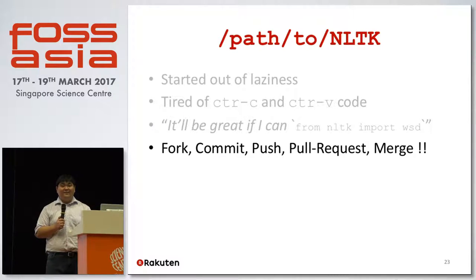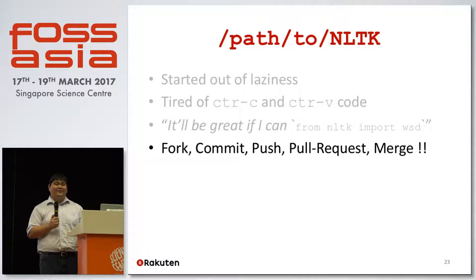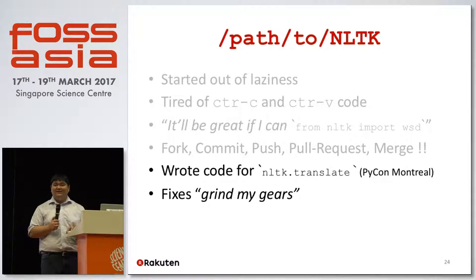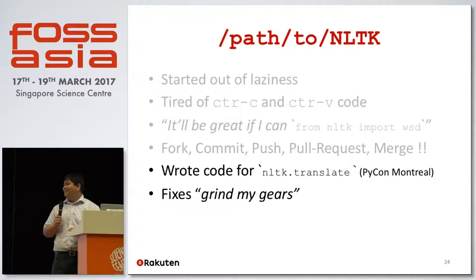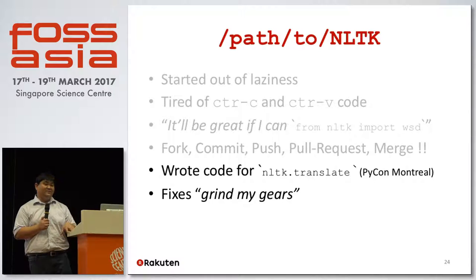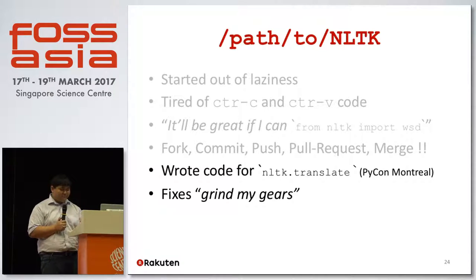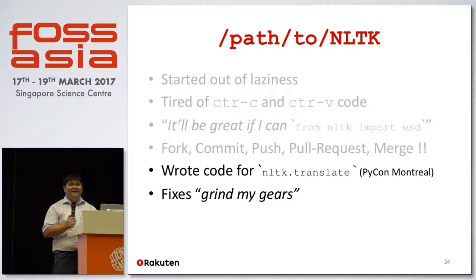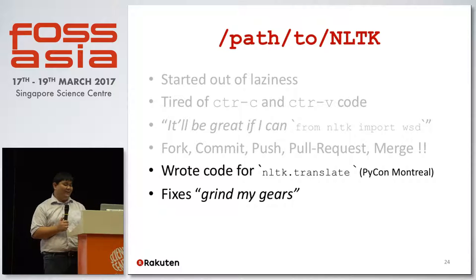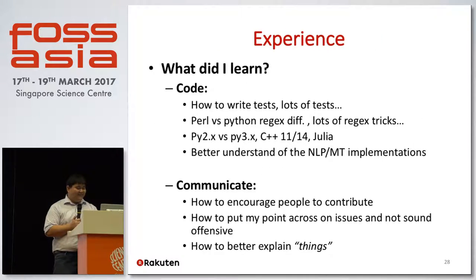So I forked it, committed, pushed, did a pull request, and amazingly the original creator of NLTK merged the code. We met during a conference, and I started coding more. I added a translation module which does most of the machine translation code — it was presented at PyCon. Nowadays I just fix whatever annoys me, like small bugs everywhere in NLTK and other open source projects.